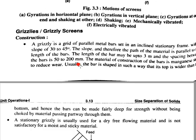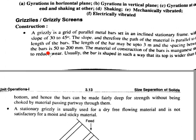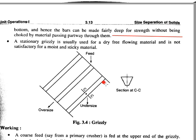Now we discuss the construction and working of grizzly screens. A grizzly is a grid of parallel metal bars set in an inclined stationary frame. The metal bars are connected at an angle like that, and you can see the screen arrangement.